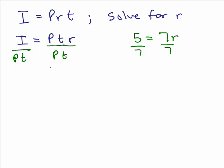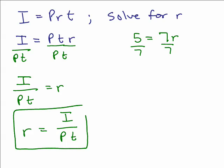And that way, the P, T's cancel and I get I over PT equals r. And again, it's easier to read it when you write the variable that you're solving for on the left-hand side.